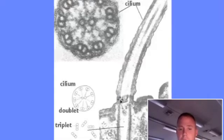Here's a cross-section of the cilium, and then a long section of one. And at the base, we have something called a basal body. And that basal body looks a whole lot like a centriole.